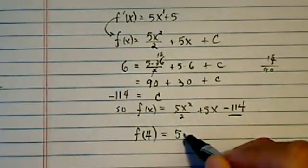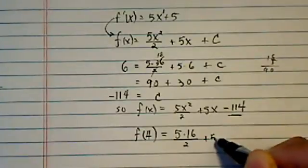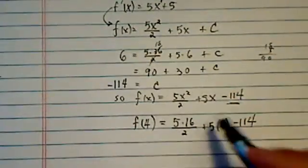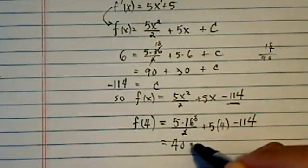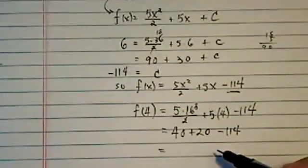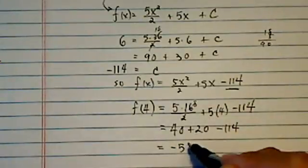So it's 5 times 16, 4 squared, divided by 2 plus 5 times 4 minus 114. And then this one is 8, so I have 40 plus 20 here minus 114. That's 60. So I have minus 54.